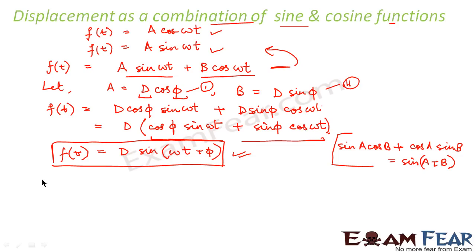So, using these two equations, we will find D. Let us first calculate or find out D in terms of A and B. So, what do we do? Let us square, squaring and adding equations 1 and 2. What do we get?